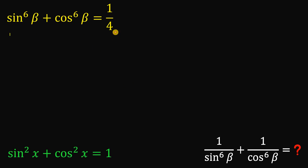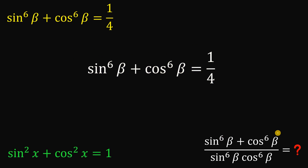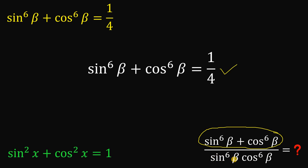Now let's focus on this question. Given this equation, the goal is to evaluate 1 over sine raised to the power of 6 of beta plus 1 over cosine raised to the power of 6 of beta. Notice we can simplify this further as sine raised to the power of 6 of beta plus cosine raised to the power of 6 of beta, all over the product of sine raised to the power of 6 of beta and cosine raised to the power of 6 of beta. This is technically our numerator, and we don't have to find its value because it is already given. The next thing we need to do is find the value of the product of sine raised to the power of 6 of beta and cosine raised to the power of 6 of beta.